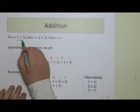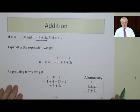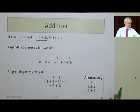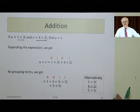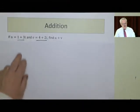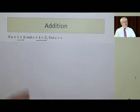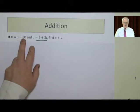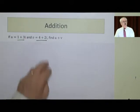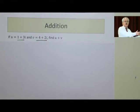Here we're looking at two numbers. u equals 1 plus 3i, and v equals 4 plus 2i. Find u plus v. This is no more difficult than if they said u equals 1 apple and 3 oranges, and this was 4 apples and 2 oranges. Could you add the apples together and the oranges together? Of course you could. So it's exactly the same.